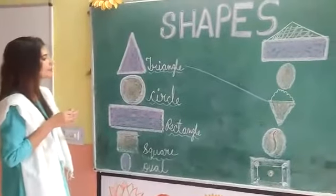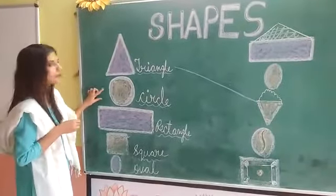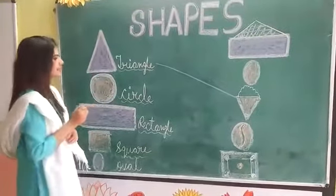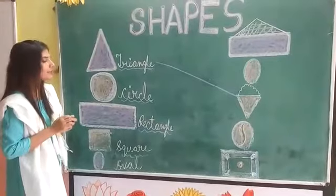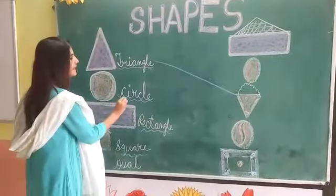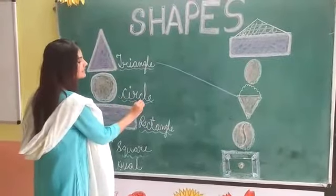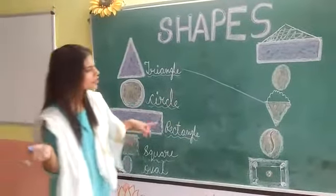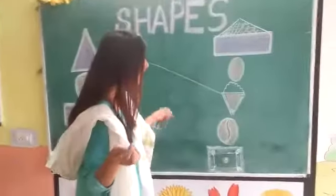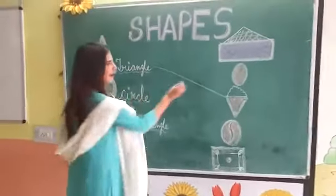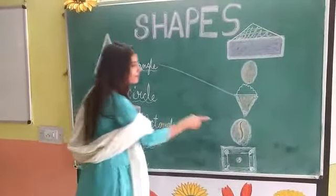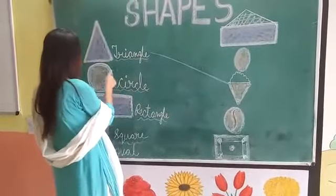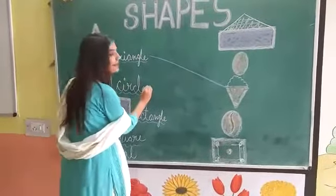Now come to the next. Tell me which shape is this? This is a circle. What is the spelling of circle? C-I-R-C-L-E. Circle. And which figure looks like a circle? Ball. Yes, ball is similar to the circle. So let's match.